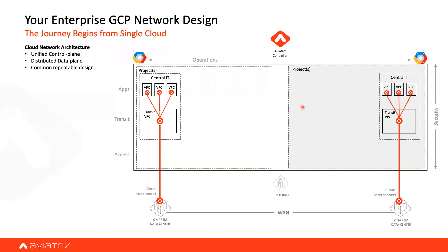So how do I put this architecture together? How does it look like from the high-level design perspective? So when we talk to our customer, this is the approach we follow. First of all, you need to think from the architecture point of view. You can see I have access, transit, and app layer here.